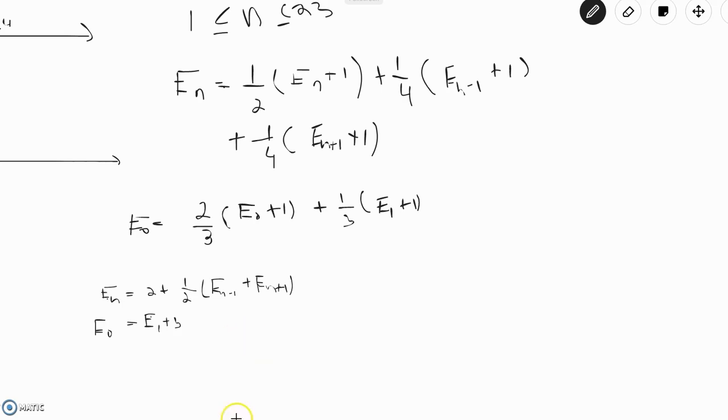So if you have E(0) equals E(1) plus 3, we also have E(1) is equal to 2 plus one-half times E(0) plus E(2). So this is also equal to 2 plus one-half times E(1) plus 3 plus E(2), which is equal to E(1). And simplifying both sides gives us that E(1) is equal to E(2) plus 7.